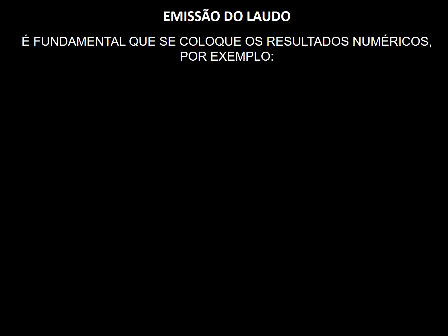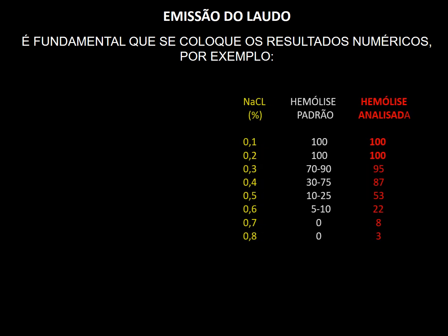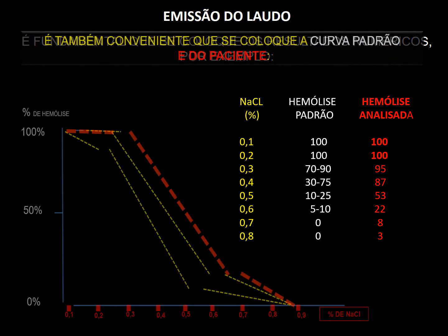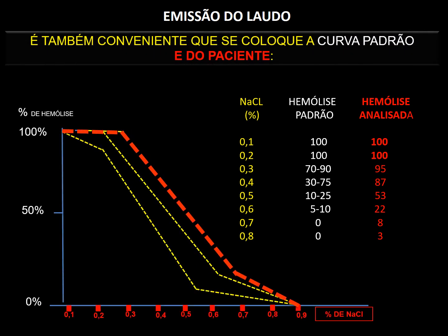A emissão do laudo é fundamental: coloca-se sempre os resultados numéricos com o padrão. Observa-se que os 0,1 e 0,2 geralmente têm 100% de hemólise, e os 0,3 ficam entre 70 e 90%. Na amostra analisada, os valores são muito superiores aos valores padrão. Ao lado coloca-se a curva — é assim que o médico gosta de receber o resultado.